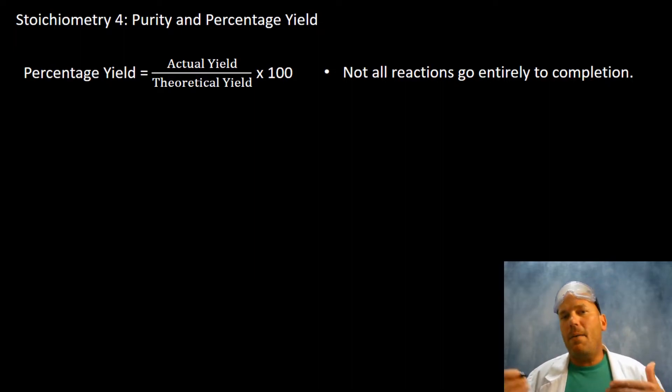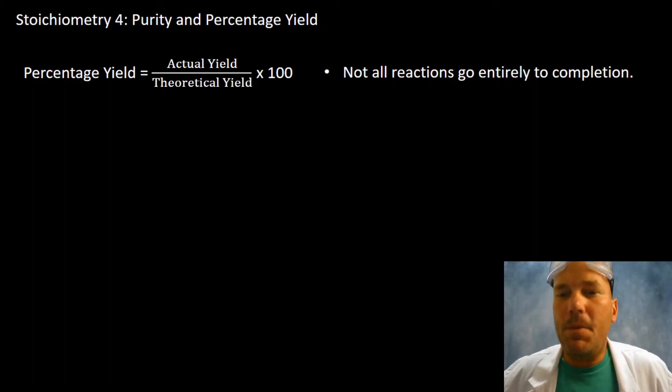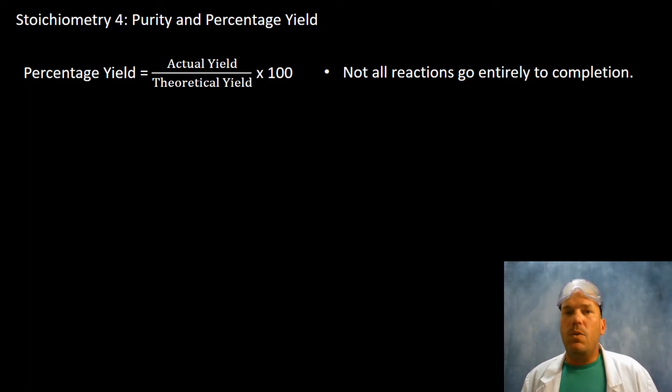And then multiplying that by 100 is going to give you the percentage yield. So you know that not all reactions go entirely to completion. You understand a little bit about purity of that. You understand that there may not be enough energy put into it. You understand that there are side reactions and alternate reactions. So we're typically going to have percentage yield be a part of nearly all of your labs from this point forward.